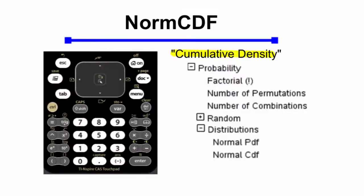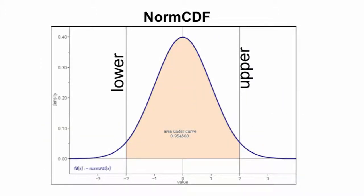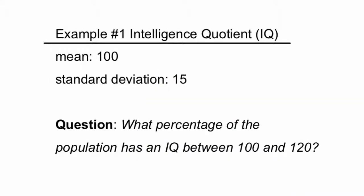Let's talk about norm cdf. This is the normal cumulative density function, and you can find it next to normal pdf if you go into the catalog, under probability, and then distributions. What normal cdf does is it gives you back the area under the normal curve if you specify a lower and an upper boundary. For example, two standard deviations away from the mean on either side of the curve gives your typical 0.95 area under the normal curve. It's best to take a look at how this works with an actual example, and I like to use IQ.